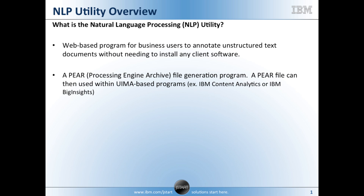This utility generates a processing engine archive file. A PEAR file can then be used within any program that makes use of the Unstructured Information Management Architecture standard, such as IBM Content Analytics, or the Big Sheets component within IBM Big Insights offering, or within the open source UIMA reference implementation.